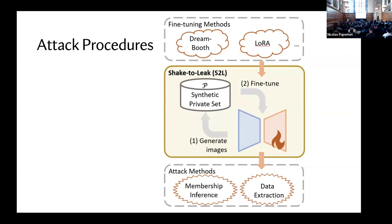The specific attack procedure of Shake-to-Leak is actually very simple. First, we generate images using the target prompt — we call this set of generated images the 'synthetic private set' (SP set). Then we use the SP set combined with existing popular fine-tuning methods such as DreamBooth, LoRA, textual inversion, and HyperNetwork to fine-tune the diffusion model. After fine-tuning, we use off-the-shelf attack methods such as membership inference attack and data extraction to perform the domain-specific attack.